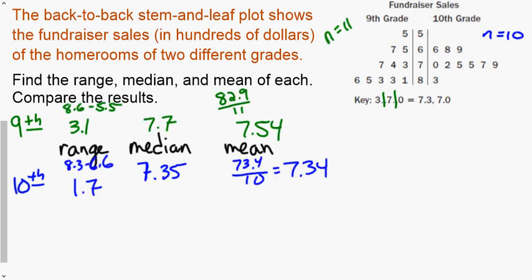You did the calculations for ninth grade, you get 3.1 for the range, 7.7 for the median. There's eleven terms, you add them all up, you should get 82.9, you divide it by eleven, you're going to get 7.54. We're going to round to the nearest hundredth.